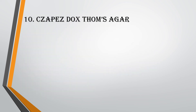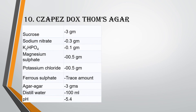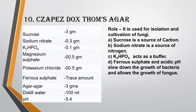The tenth medium is Czapek Dox Thoms Agar. Components are: Sucrose 3 g, Sodium Nitrate 0.3 g, K2HPO4 0.1 g, Magnesium Sulfate 0.05 g, Potassium Chloride 0.05 g, Ferrous Sulfate in trace amount, Agar Agar 3 g, Distilled Water 100 ml, and pH 5.4. It is used for isolation and cultivation of fungi. Sucrose acts as a source of carbon, Sodium Nitrate is a source of nitrogen, K2HPO4 acts as a buffer, and Ferrous Sulfate along with the acidic pH slows down bacterial growth while allowing fungal growth.